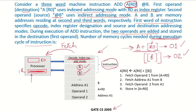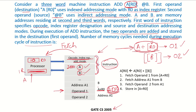The number of memory cycles required during execution: first, we know operand 1 is at A plus R0. We already have the value of A in the processor since the instruction has been fetched, and R0 is already inside the processor. For example, if R0 is 10 and A is 2000, then A+R0 = 2010. We access memory address 2010 and fetch operand 1 to the processor. This is memory cycle 1.